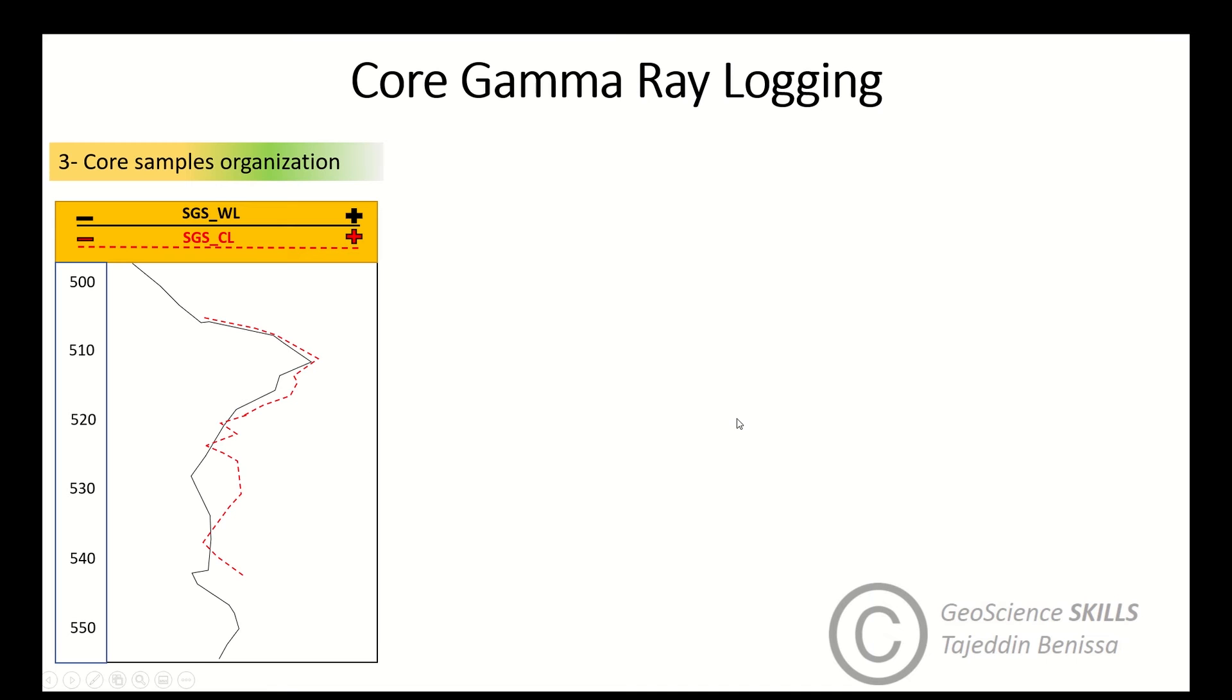Step number three is core sample organization. In case some errors occurred, for example, when you note that there is an upside down core gamma ray behavior in some intervals of the core, like we see here in the interval from 520 to 540, there is a difference in reflection between core gamma ray and wireline gamma ray.